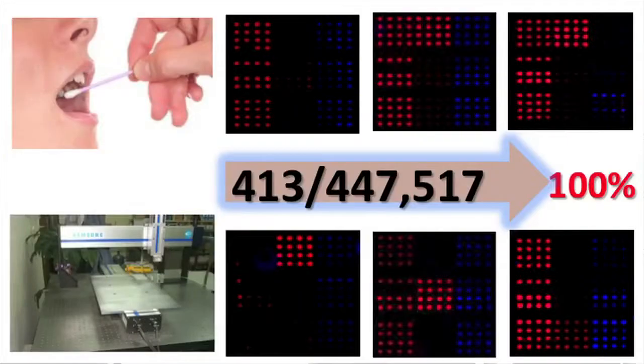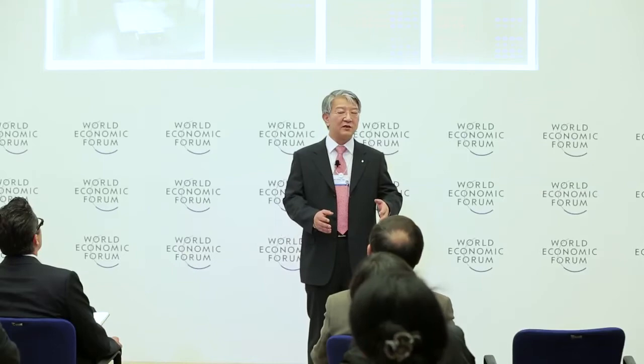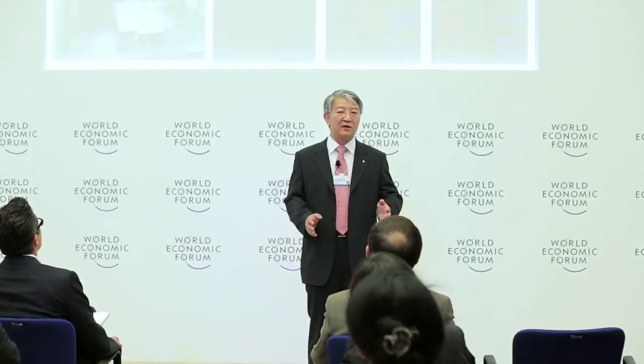It can be done very easily by swabbing some inner cells from your mouth, and then you do PCR amplification of the DNA region, and then you hybridize the pre-patterned chip.